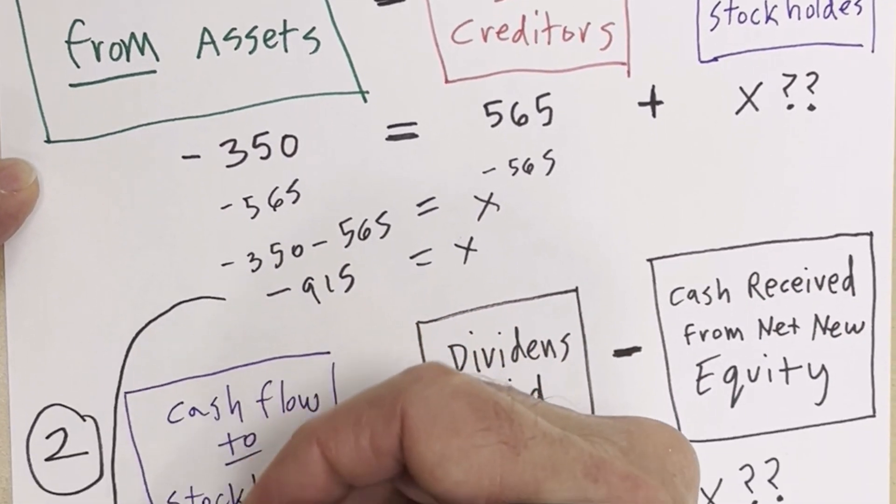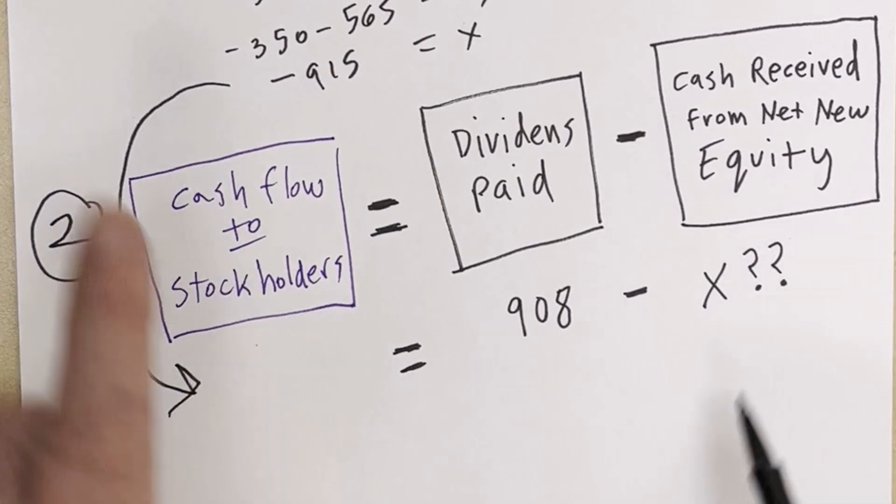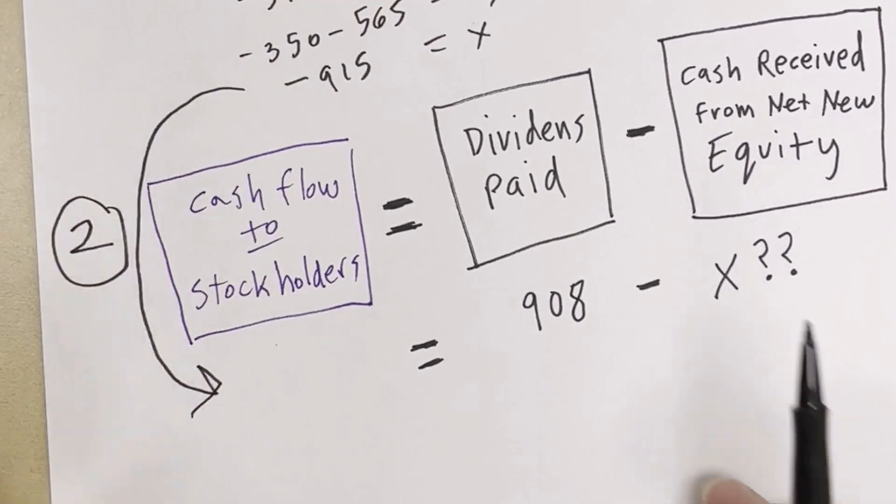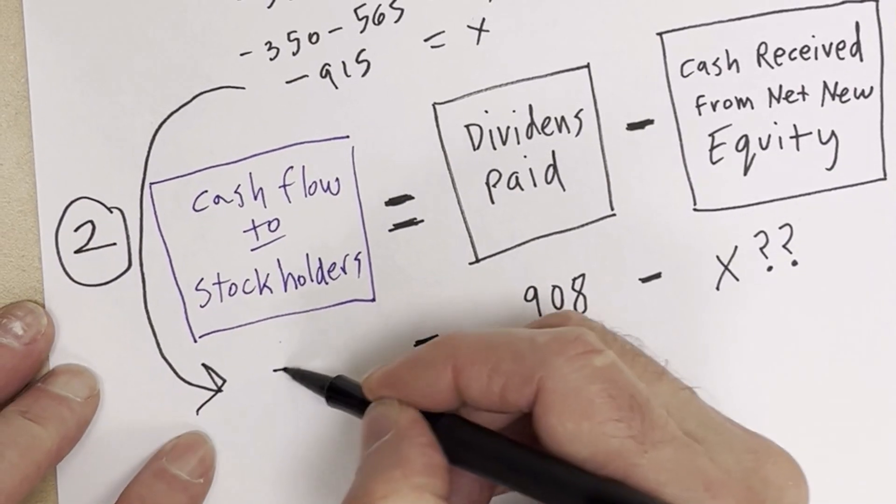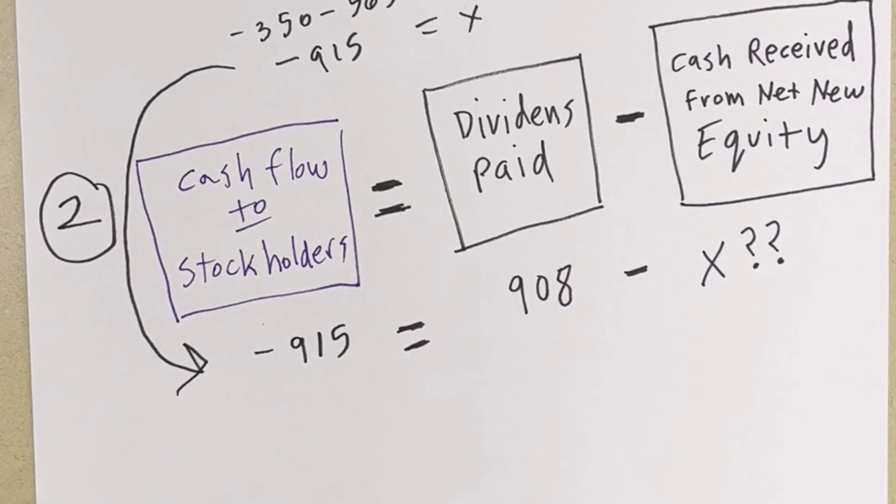Now, we take this, and that's what was giving some of you trouble. You have these two things you needed to solve for. Well, we can get this from somewhere else, so we just minus 915, and now we do algebra.